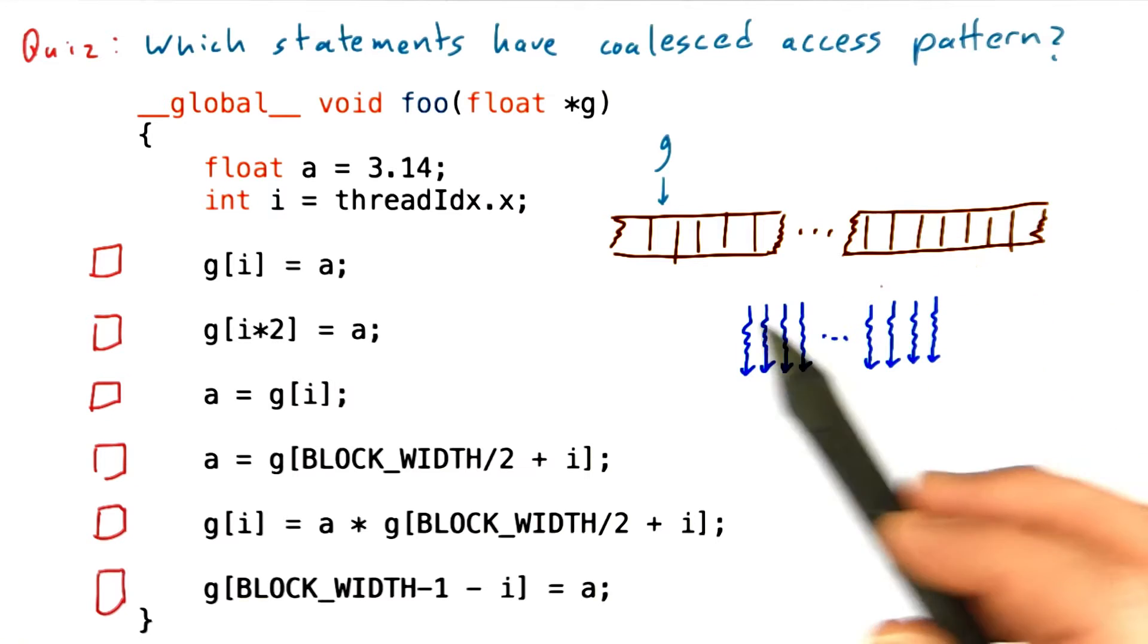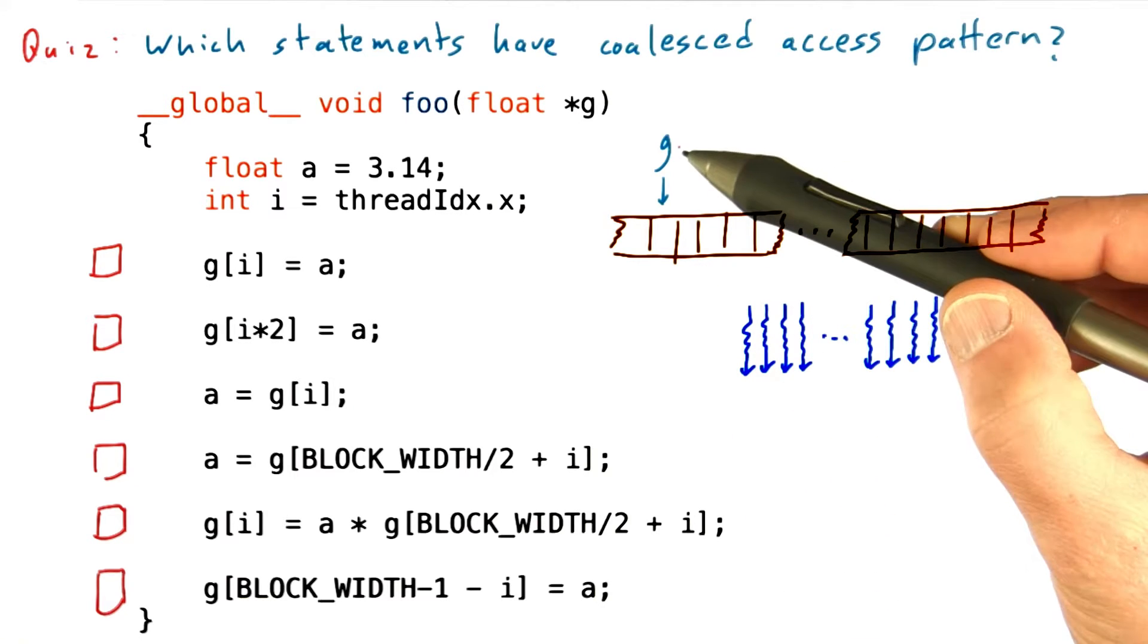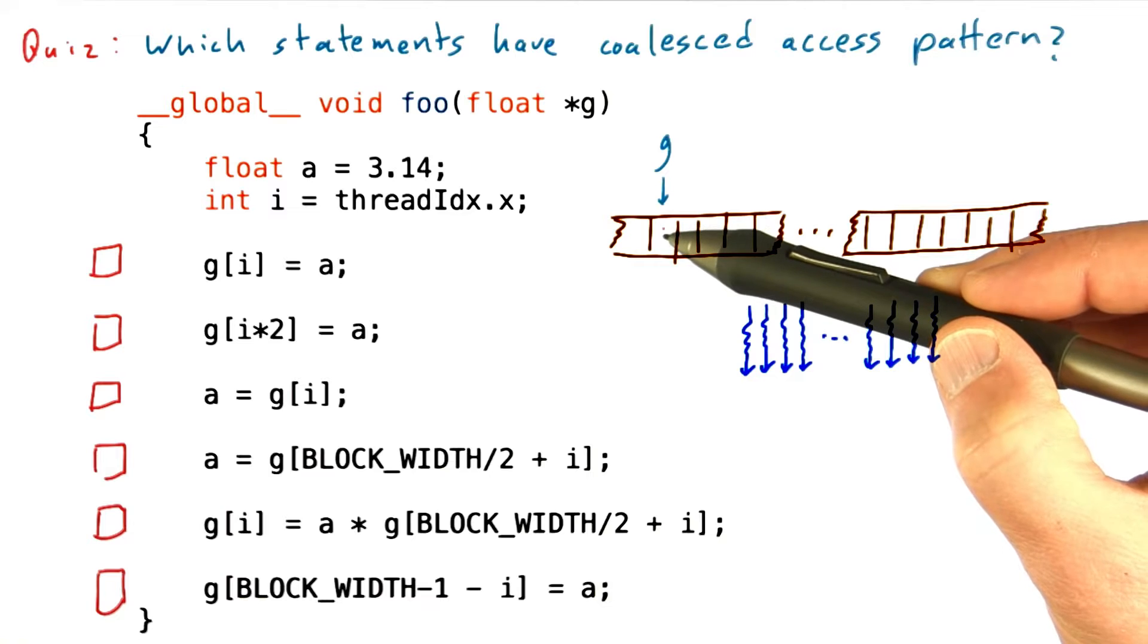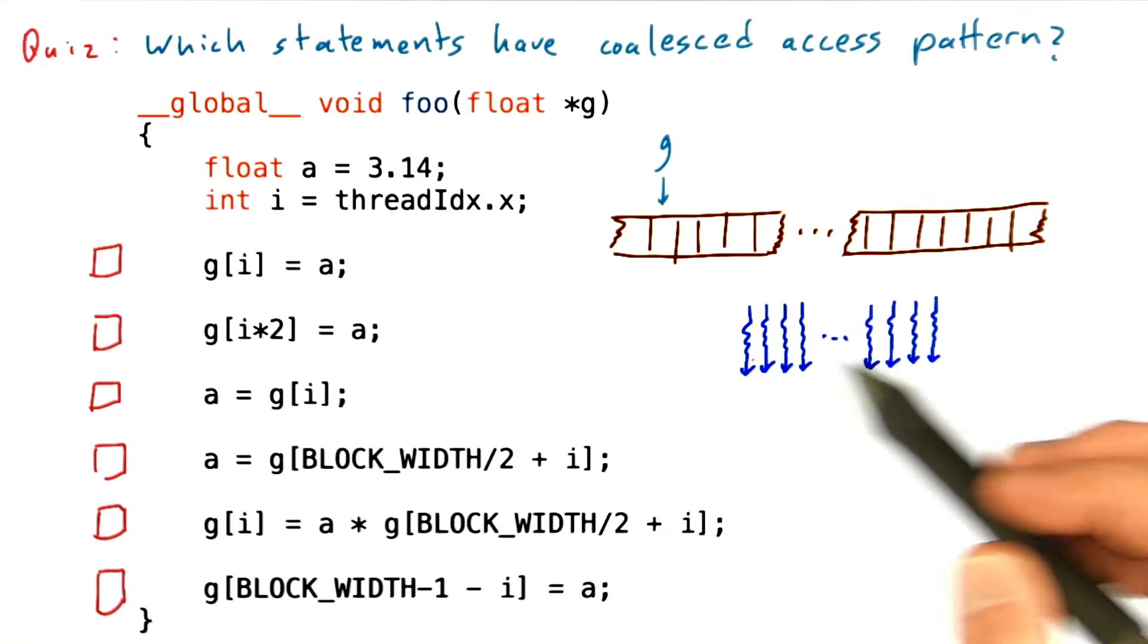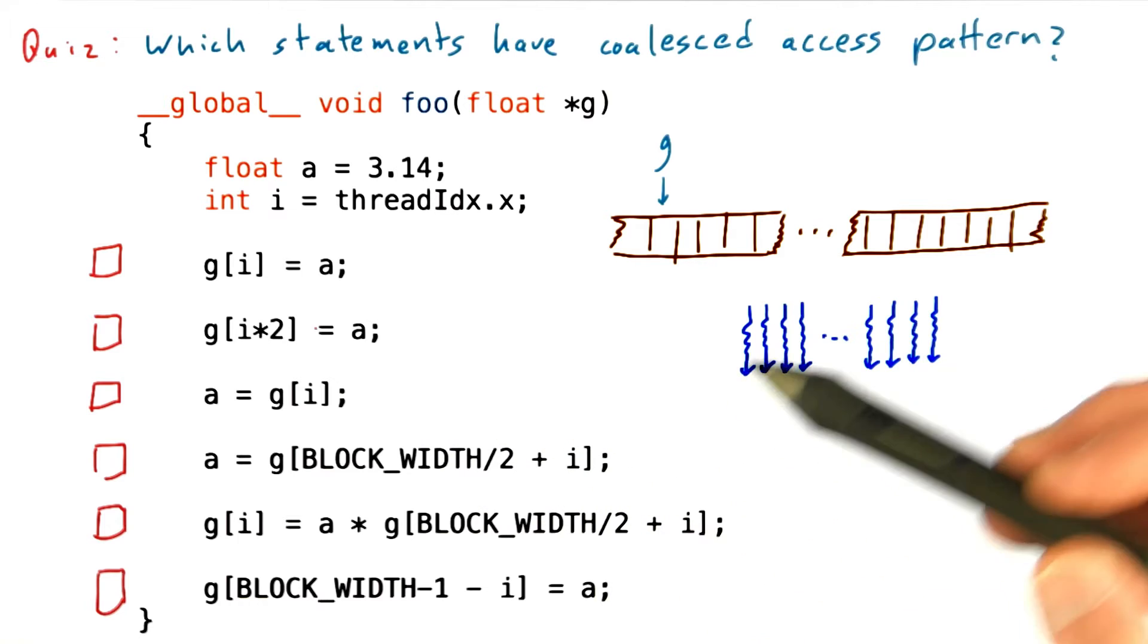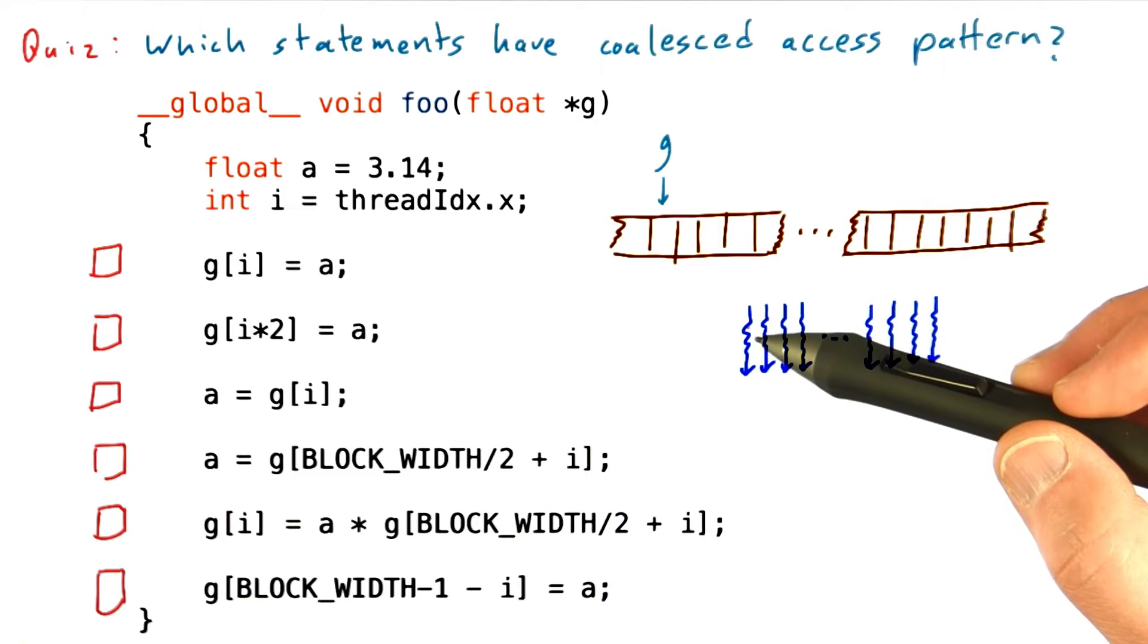Okay, let's look at these. So here I've drawn a chunk of memory, and we're going to say that g points into this memory. So this is g sub 0, g sub 1, g sub 2, and so forth. And here's a bunch of threads.